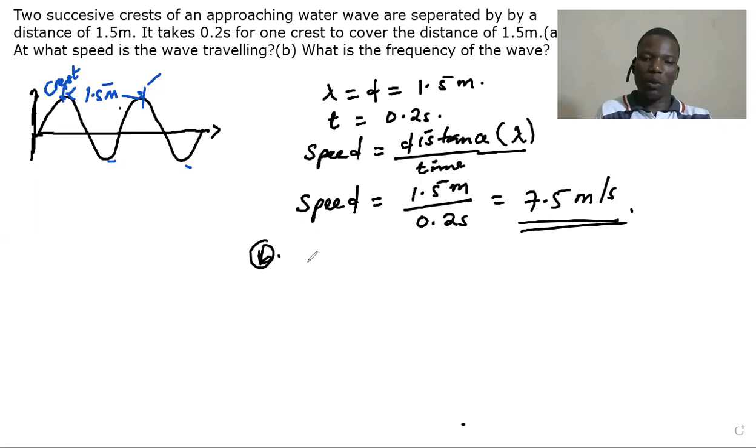And (b): What is the frequency of the wave? We know the relationship, or we are going to use the relationship of speed, wavelength, and frequency, and then we are going to make frequency the subject of the formula and be able to calculate frequency because here we have the wavelength and we also have the speed of this wave.